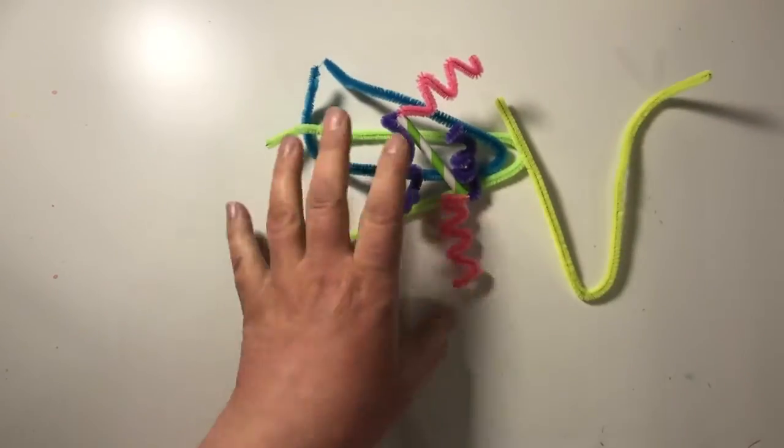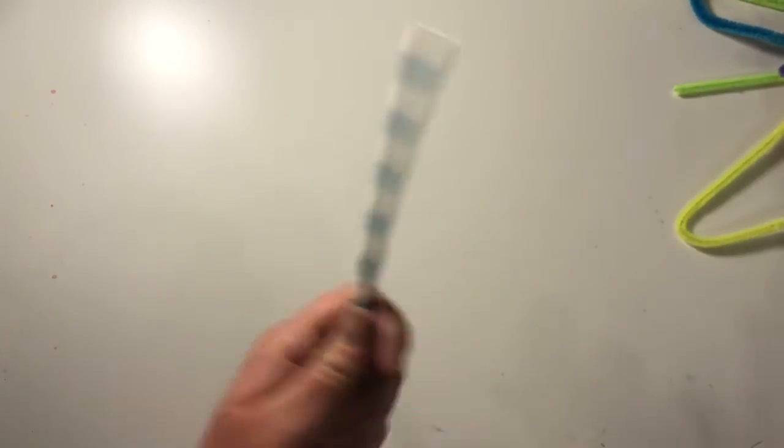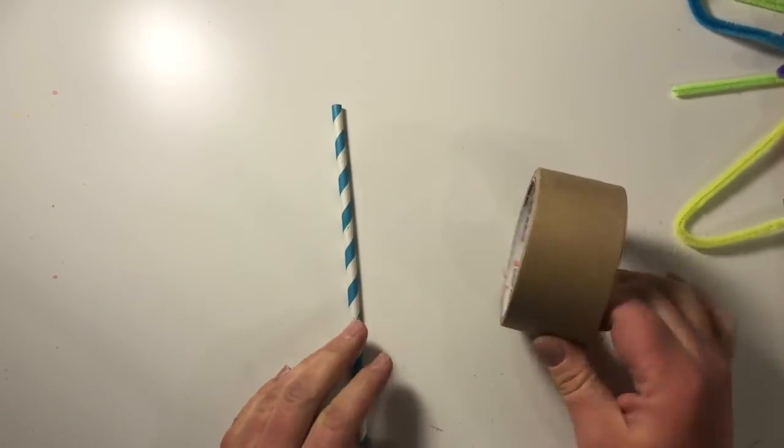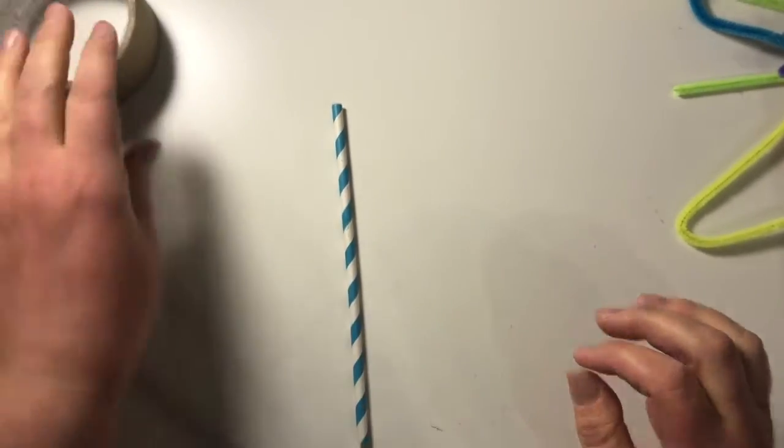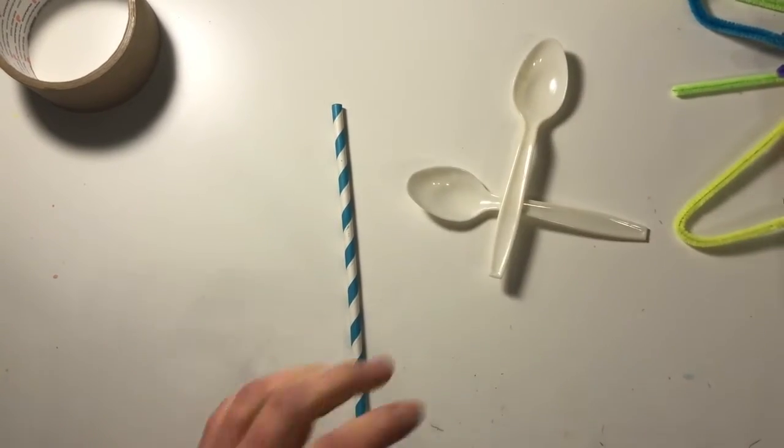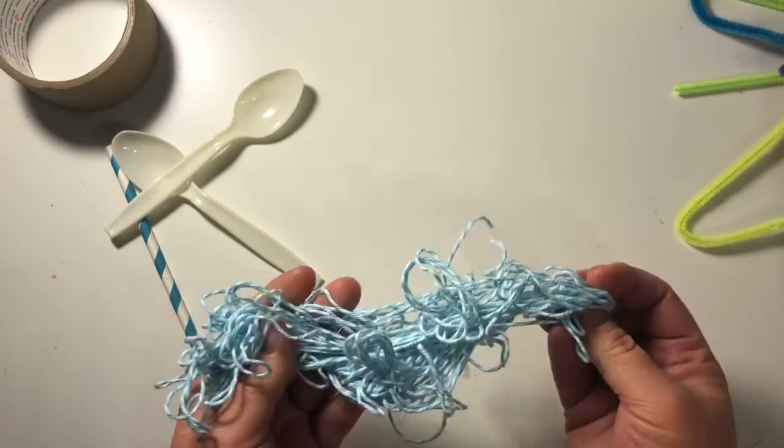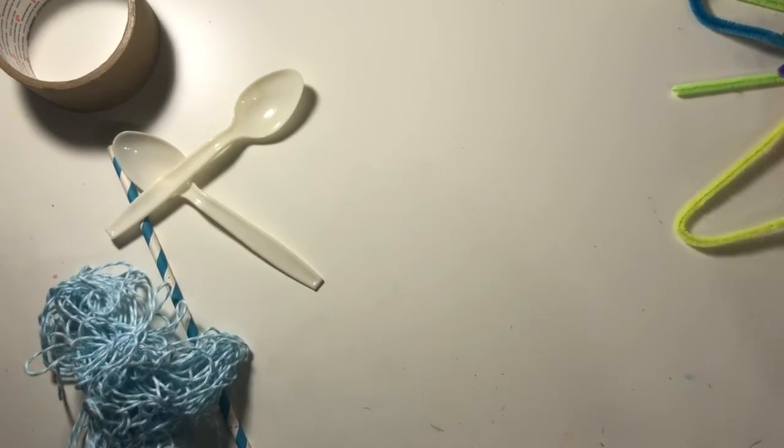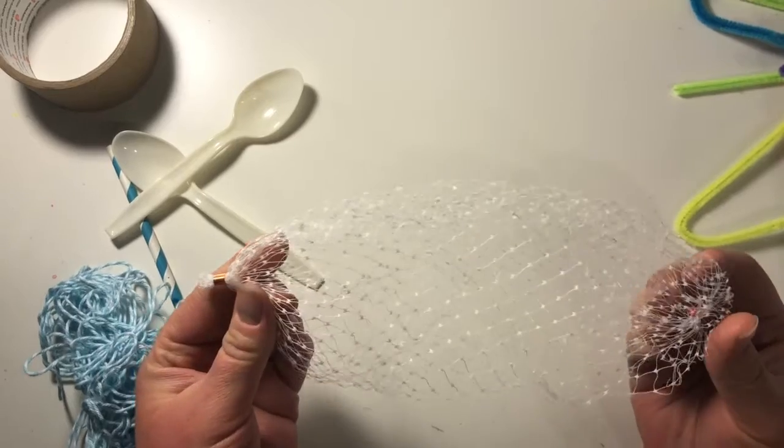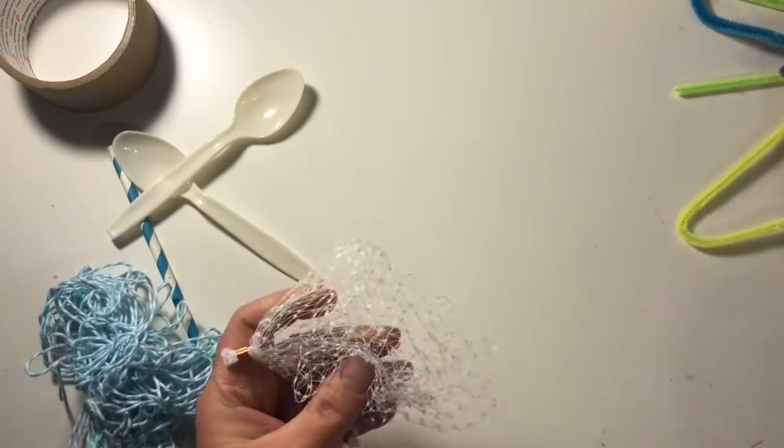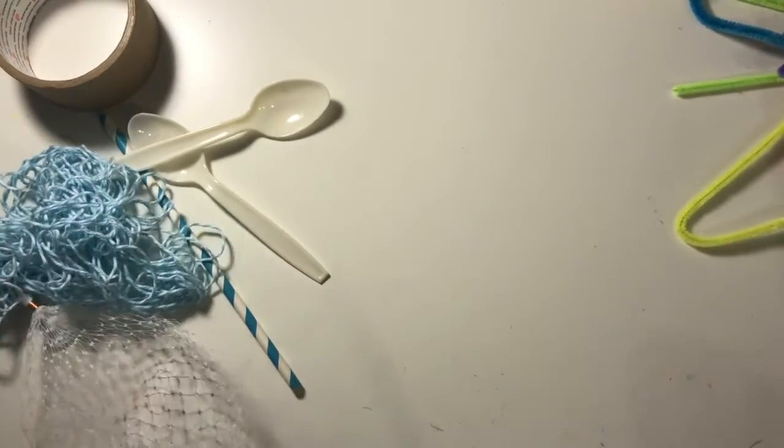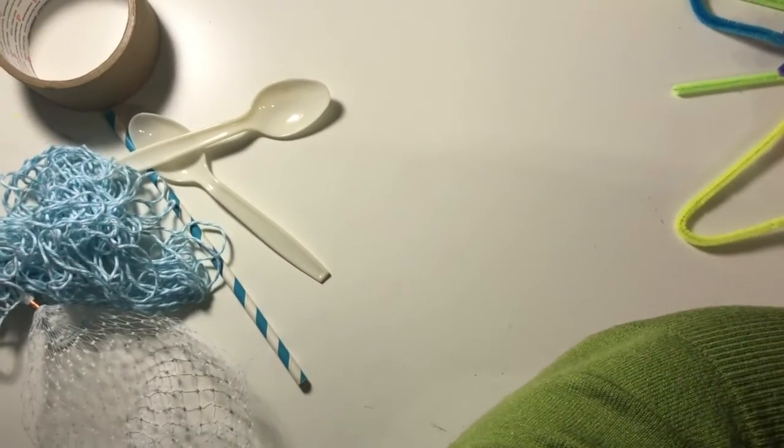And then whatever you can find around your house. Pipe cleaners might be great. Paper straws or plastic straws. This empty tape roll. Plastic cups. Plastic forks or spoons. Maybe some string. These mesh that are usually around, this one is from cheese, but also fruit and vegetable ones. Okay, that might be helpful.